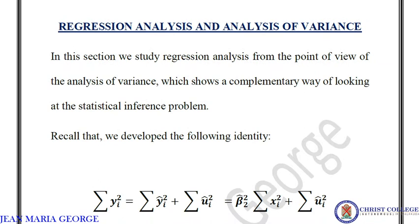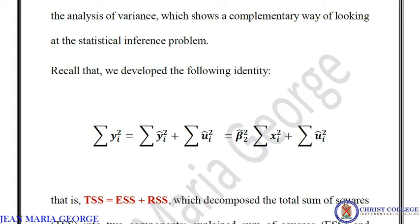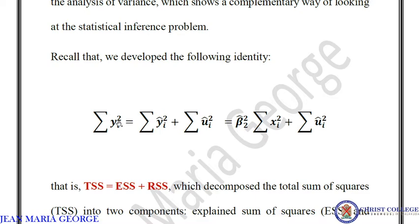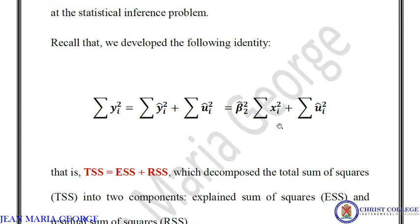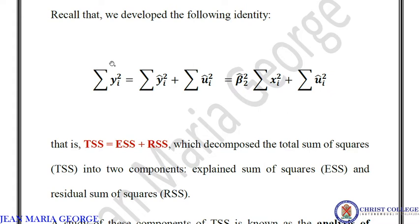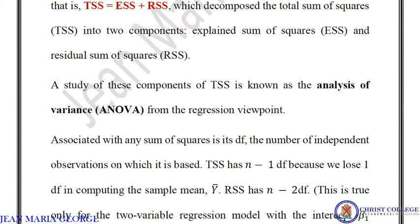Let us recall the identity: TSS, ESS, and RSS — total sum of squares, explained sum of squares, and residual sum of squares. The identity is: sigma yi squared equals sigma yi-hat squared plus sigma ui-hat squared. This is TSS decomposed into ESS and RSS, where ESS can be written as beta-2-hat squared times sigma xi squared. So the total sum of squares is divided into two components — ESS and RSS — and studying these components is called analysis of variance from the regression point of view.